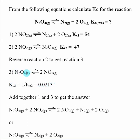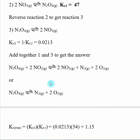Now I have N2O4 on the left. I also need N2 and O2 on the right-hand side of my target reaction. In reaction one, N2 and O2 are already on the right-hand side, so that looks good. Now if I take reaction one and reaction three and add them together, the two NO2 molecules cancel — two NO2 on the left-hand side and two NO2 on the right — and what I'm left with is exactly the target reaction I was looking for.